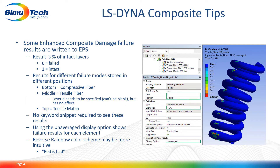If you are using Enhanced Composite Damage, there are a number of different failure results that get written to a user-defined result called EPS. Normally EPS is equivalent plastic strain for a metal material model, but for the Enhanced Composite Damage material model that result is the percentage of intact layers for a variety of different failure criteria. If you're looking at the bottom layer — setting the position option to bottom — that's going to give you the percentage of intact layers in the compressive fiber mode. Middle is the tensile fiber mode, and top is the tensile matrix mode.